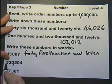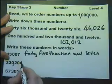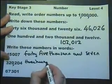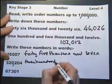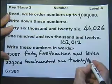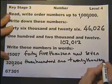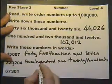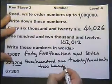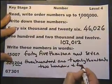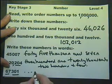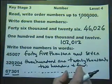This one is three hundred and twenty thousand. That's the thousands column, so that's three hundred and twenty thousand, two hundred and four. Sixty-seven thousand, three hundred and one. Sixty-seven thousand, three hundred and one.